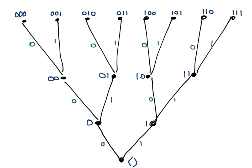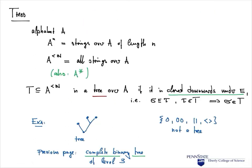Here I have sketched all strings over the binary alphabet up to length 3. We start with the empty string, and if we extend it by either 0 or 1 we get 0 and 1. Extending 0 by 0 gives 0,0; extending by 1 gives 0,1; and so on. We end up with eight possible strings of length 3. This structure is reminiscent of what we would call a tree — there's a root, branches going off, and from those branches other branches go off, and so on. This intuition is captured by a mathematical structure called a tree.